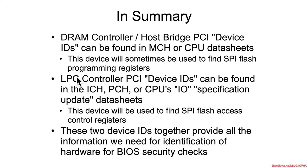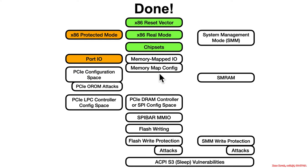So the DRAM controller and the LPC device are the two bits of information we need to uniquely identify the relevant hardware for checking the access controls. With that, we're done with the chipset section, and we are well on our way towards PCIe, ultimately on our way to flash write protection.